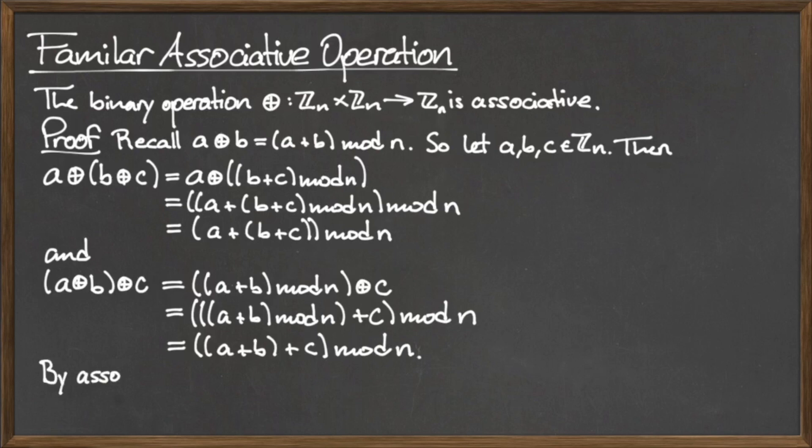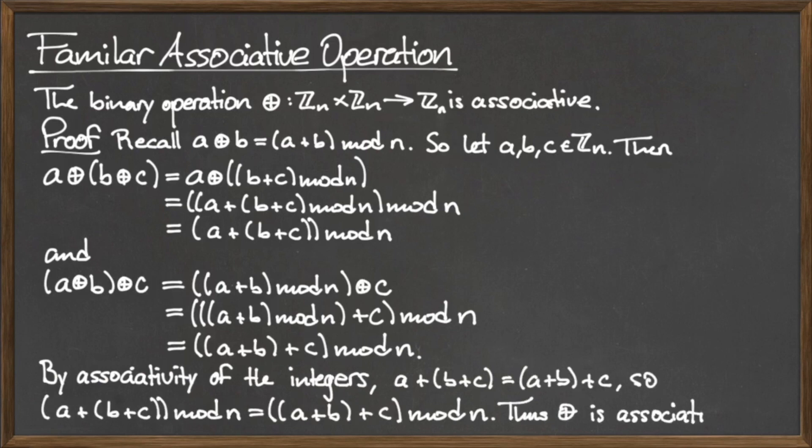Because the addition of integers is associative, a plus the quantity b plus c is equal to the quantity a plus b plus c. This proves that o plus is associative.